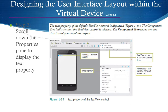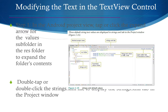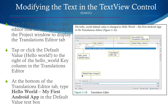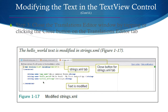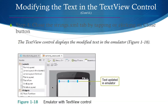Scrolling down to the properties pane displays the text. In the Android project view, you can tap to expand the XML. You can also open the translation editor, which shows the default value and hello variable name. In the XML itself you can change the string — for example, 'Hello, my first Android app' or 'Hello, my name is Jeff Seaman.' The TextView control displays the modified text in the emulator.